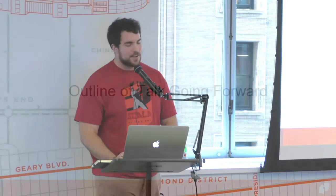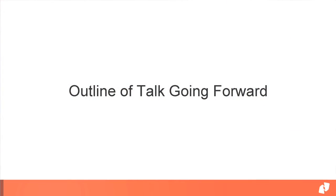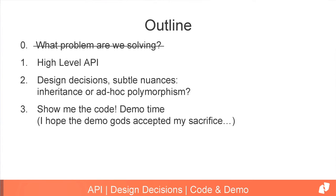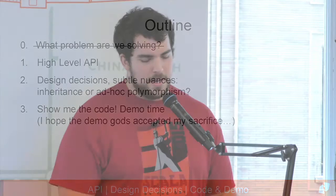So here's the outline of this talk going forward. We've already covered the problem we're solving. I'll do a quick high-level API overview to reinforce the concepts, then spend a good chunk of time on the design decisions and the subtle nuances between inheritance and ad hoc polymorphism. At the end, I'll show some code to satisfy your desire to know what's going on. And I hope the demo gods accept my sacrifice and it goes well.